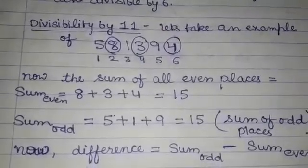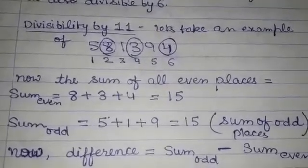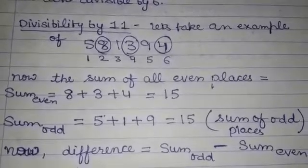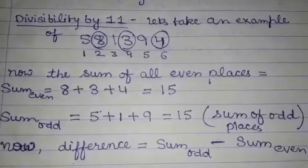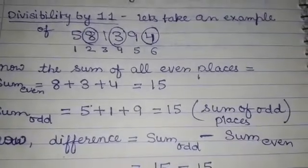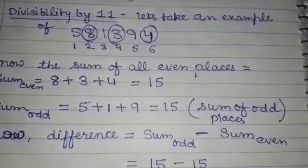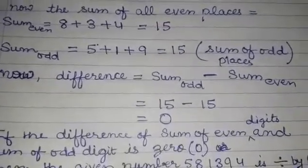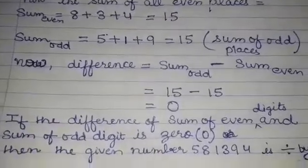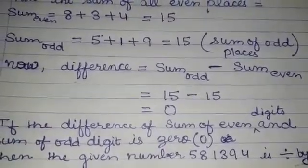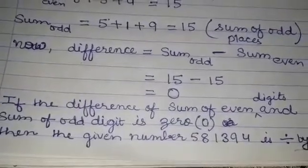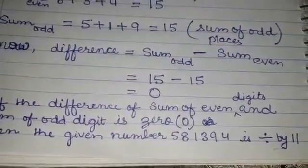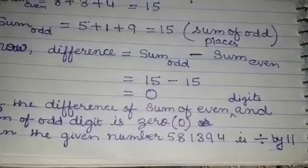Now we also find the sum of all odd place digits. The odd place digits are 5, 1 and 9. The sum of 5, 1 and 9 is also 15. Now we find the difference of the sum of odd place digits and the sum of even place digits. Both are 15, so the difference is 15 - 15 = 0. The divisibility rule of 11 is: if the difference is 0, then the given number is always divisible by 11. So 581394 is divisible by 11.